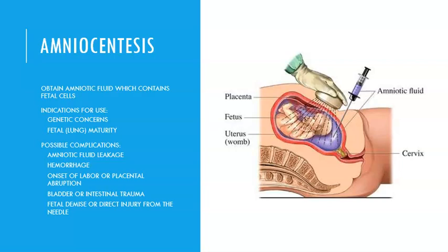Amniocentesis can also tell us gender as part of genetic makeup, but this test will not be done just to determine gender because it is highly risky. Piercing the amniotic sac with a needle means there's a potential that the hole will not close back up, and you can actually rupture the amniotic sac, causing loss of the pregnancy. It is reserved for when you really need to know the genetic potential for certain defects.